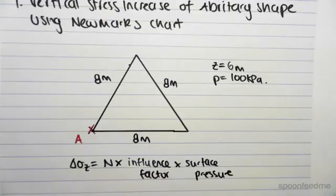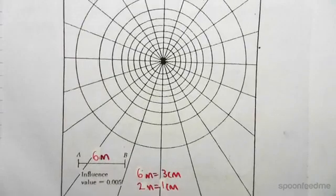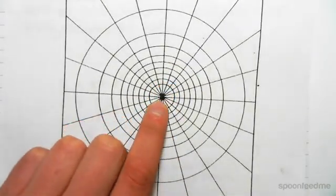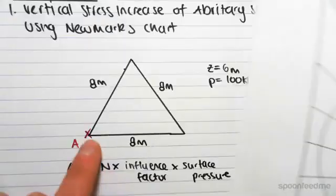Now, the first thing we're going to do is go to our Newmark's chart. It looks like this. And we're literally going to come and draw on our shape. And at the center, we're going to put the point you're interested in. So, that's going to be point A.